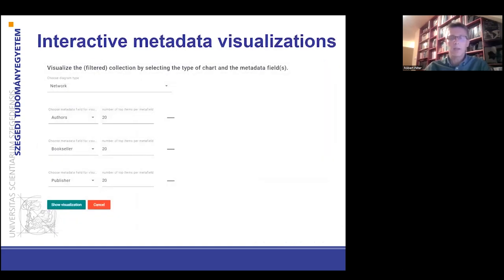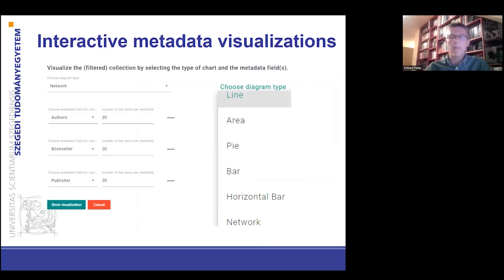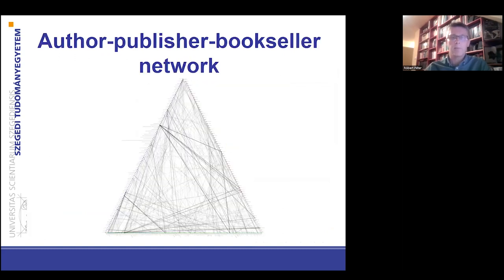The metadata visualizations in Evermet are interactive. It is the task of the user to choose which metadata fields she or he would like to analyze and how, what types of diagrams and charts she or he would like to use during the analysis. This is an example of a network visualization — you can see an author, publisher, bookseller network of 340 18th century Masonic-related books. With the naked eye, you are unable to observe the connections between the different agents of this book industry.